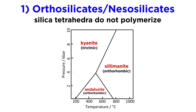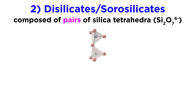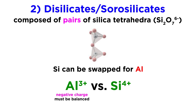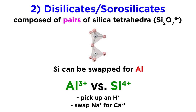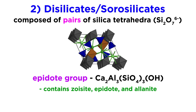Next are the disilicates, also called sorosilicates, which are composed of pairs of silica tetrahedra that share one oxygen atom and have the basic structural unit Si2O7 6-. Due to its similarity in size and charge with the silicon cation, aluminum sometimes substitutes in, forming aluminum tetrahedra. When aluminum, which has a charge of 3+, substitutes for silicon, which has a charge of 4+, the mineral must somehow balance out this gained negative charge. This can be accomplished by picking up a hydrogen ion, or substituting a lower-charged cation like sodium for a higher-charged one like calcium. The most common sorosilicates are in the epidote group, which contains the minerals zoisite, epidote, and allanite.